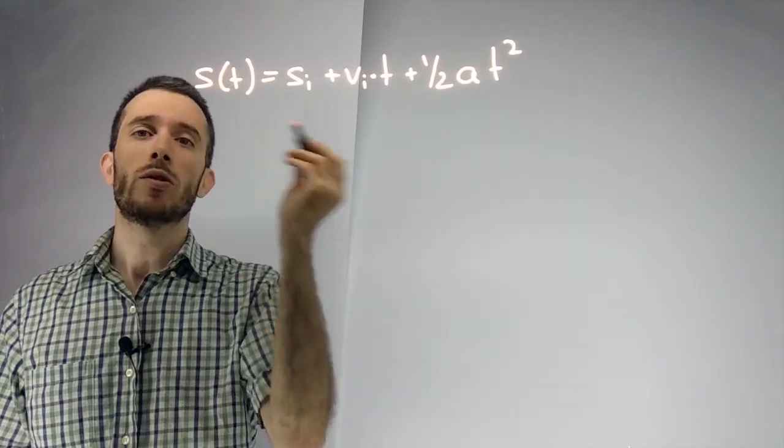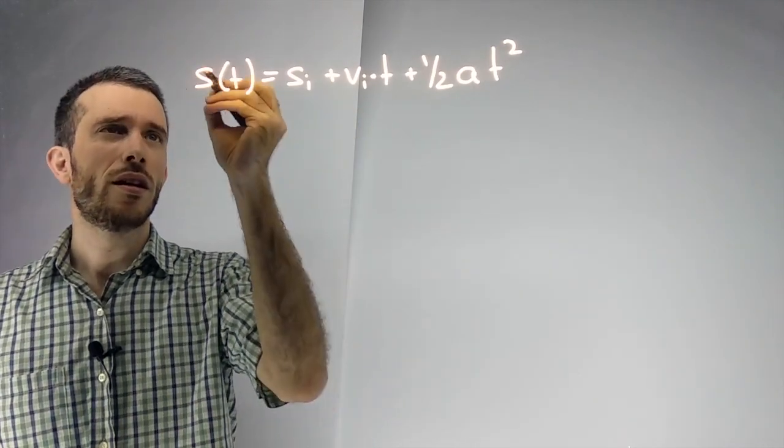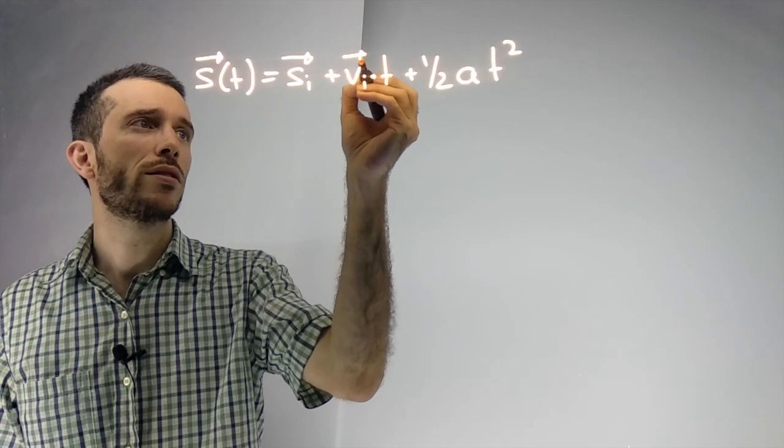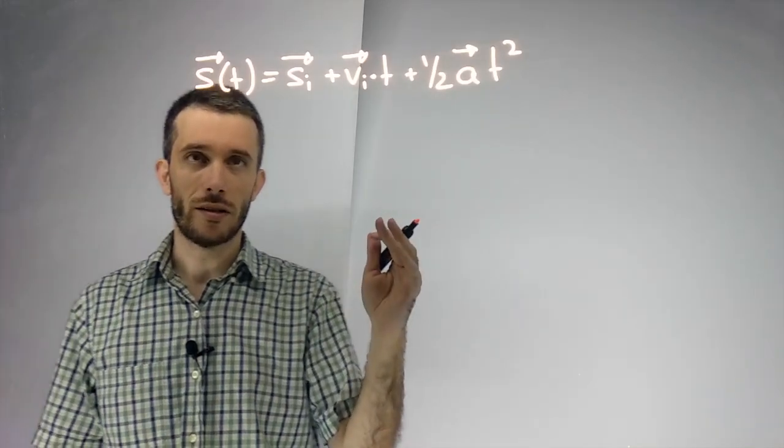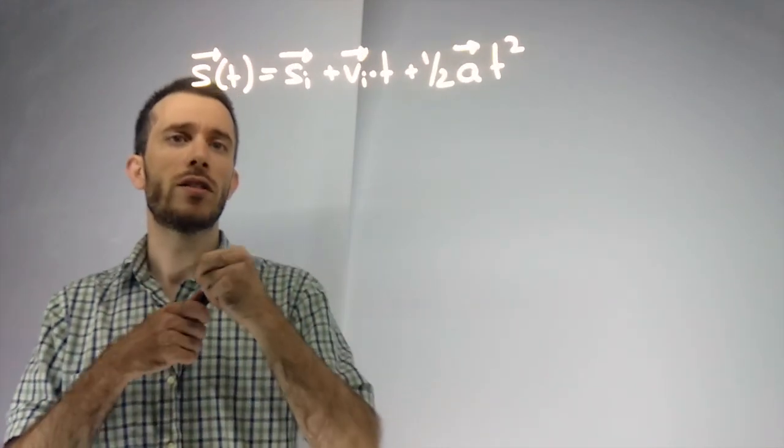Now, especially if we talk about 2D kinematics, you have to consider that this is a vector equation. We have position as a vector, velocity as a vector, and acceleration as a vector. Now, why is this the main equation? Because you can get all the other equations from it.